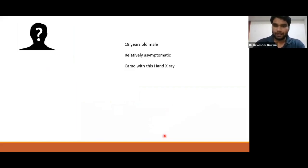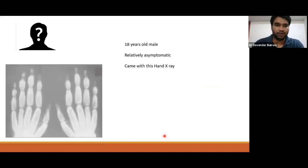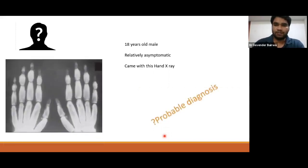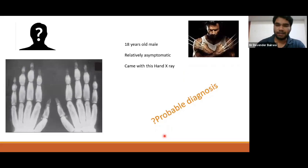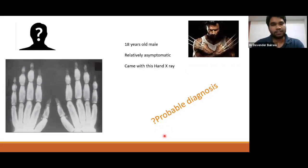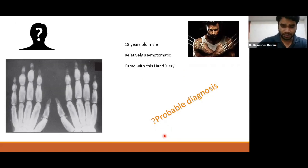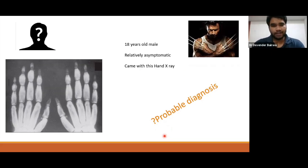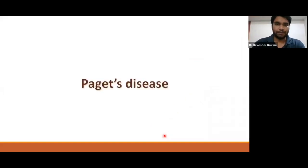The fifth patient is an 18-year-old male, relatively asymptomatic, who came with a hand X-ray only. He thinks he might be some kind of mutant — maybe Wolverine. He has doubt in his mind and has come to clear it off. So these are the five case scenarios; we will be able to solve all of them after both classes are done.